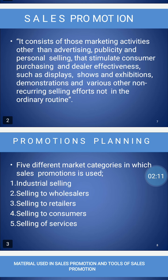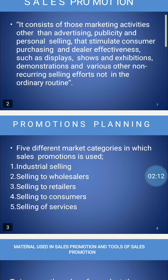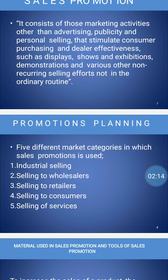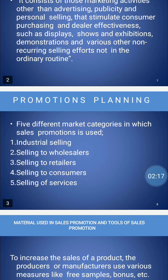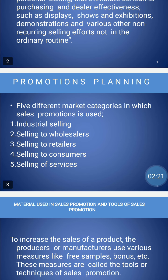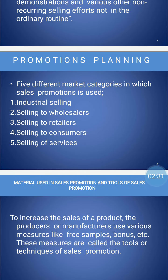Promotion planning involves five different market categories in which sales promotion is used: first, industrial selling; second, selling to the wholesaler; third, selling to the retailers; fourth, selling to the consumers; and fifth, the selling of services.